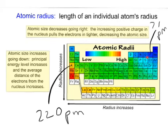Why the trend to get larger going down, or smaller going across to the right? As we go from left to right, the electrons are increasing in number within that energy level. Because of that, there is a greater nuclear attraction between the electrons and the nucleus, so the atom pulls in tighter and actually gets smaller going from left to right. Then, once you increase in energy level and go down to a greater energy level, the size gets bigger again.